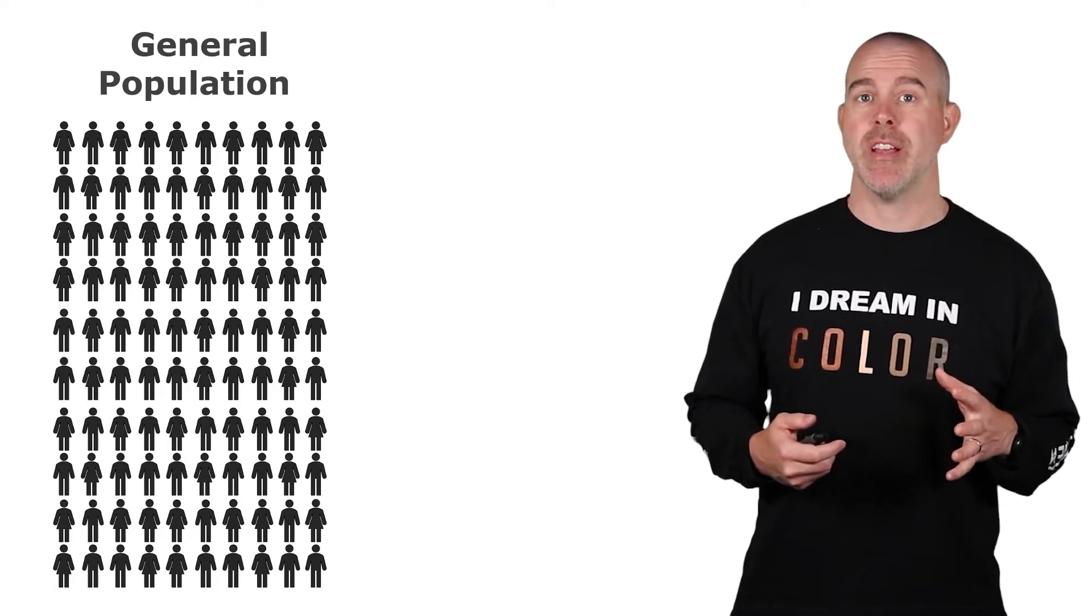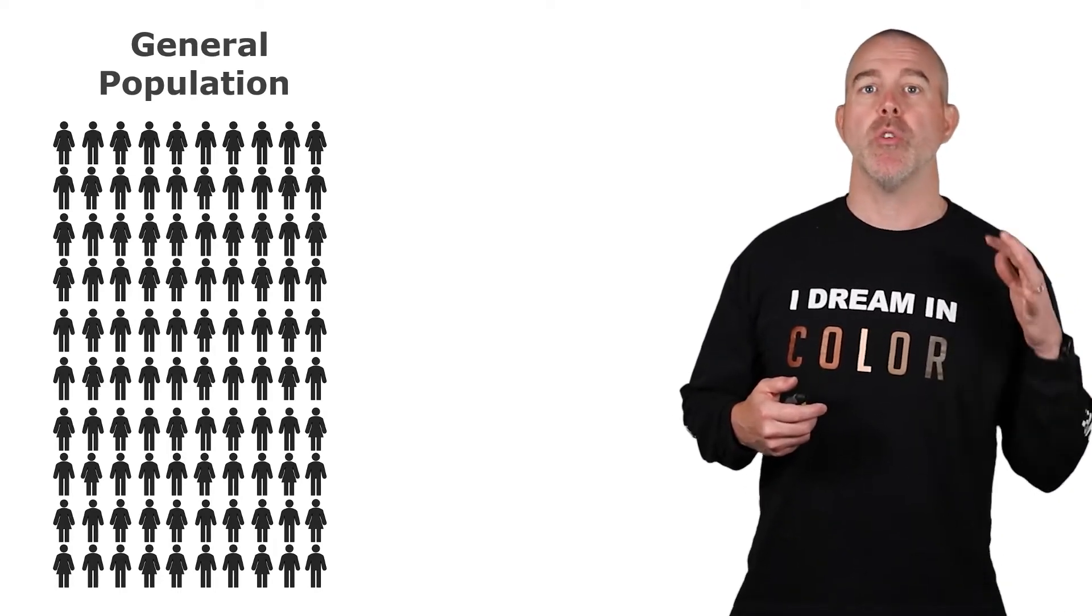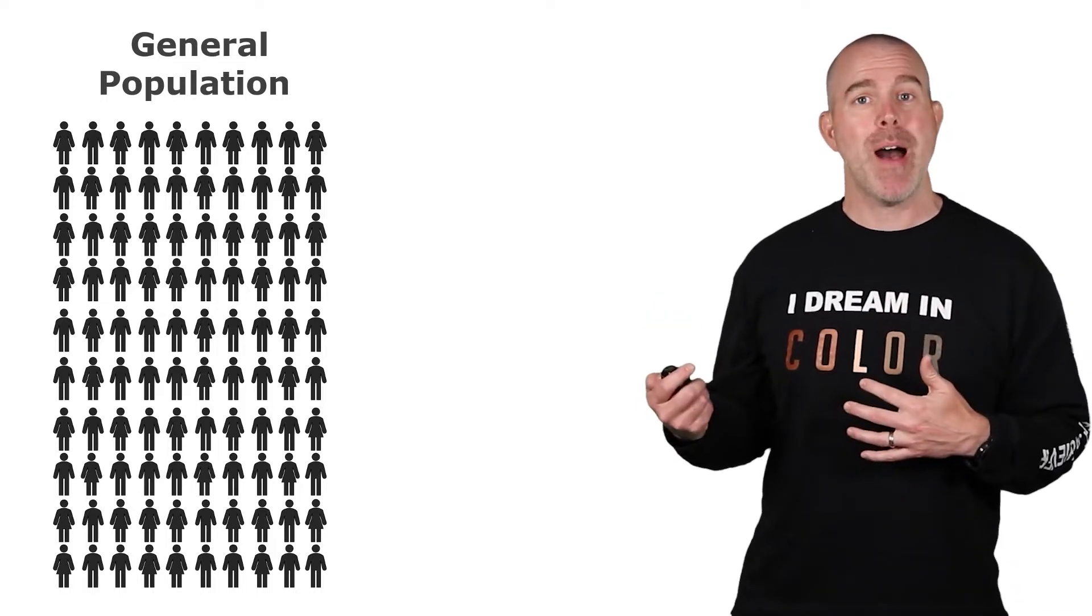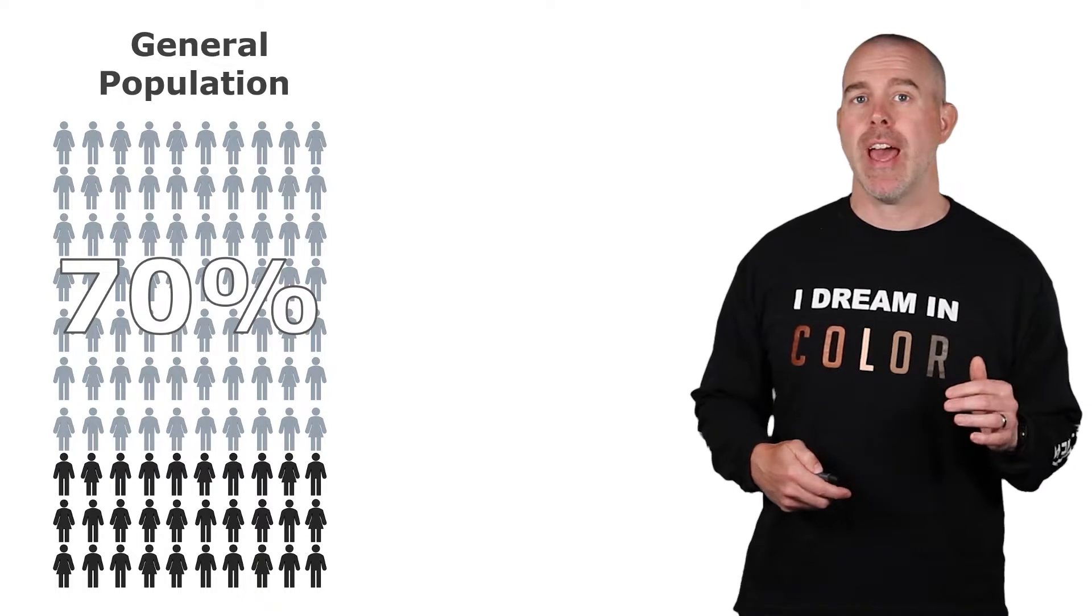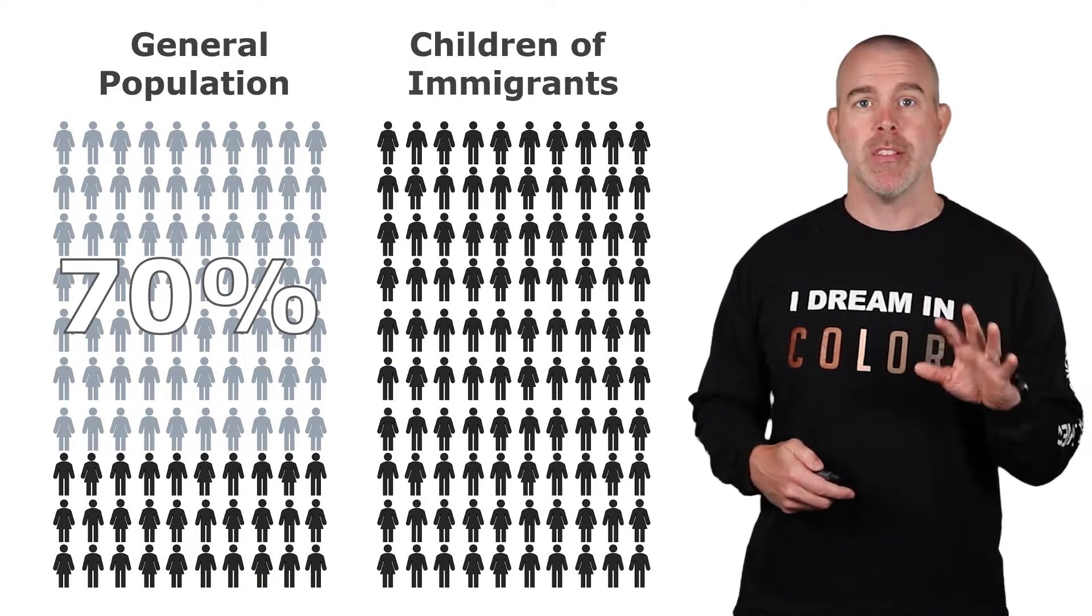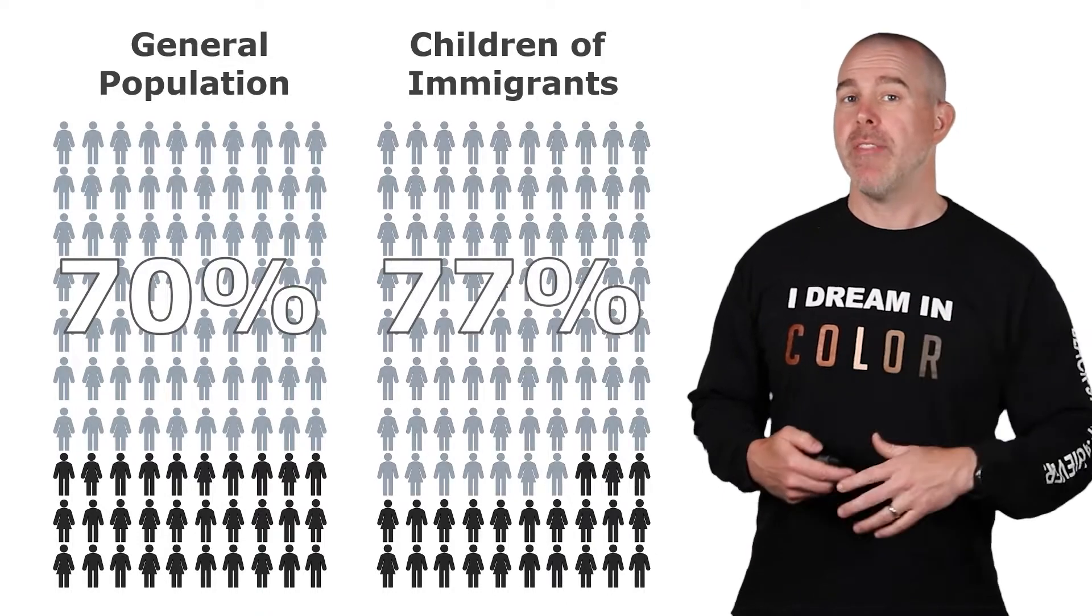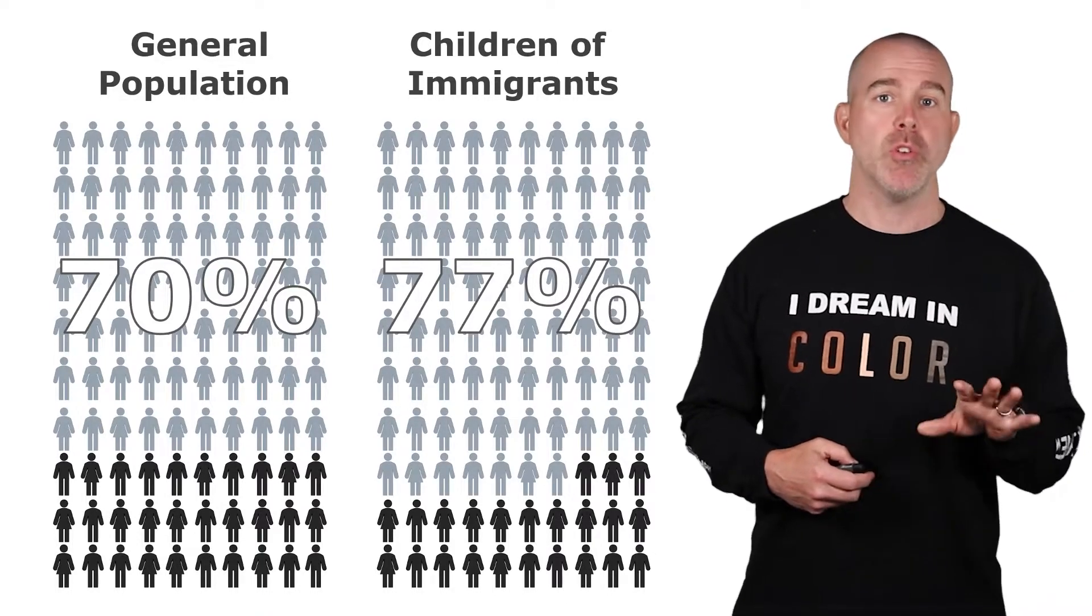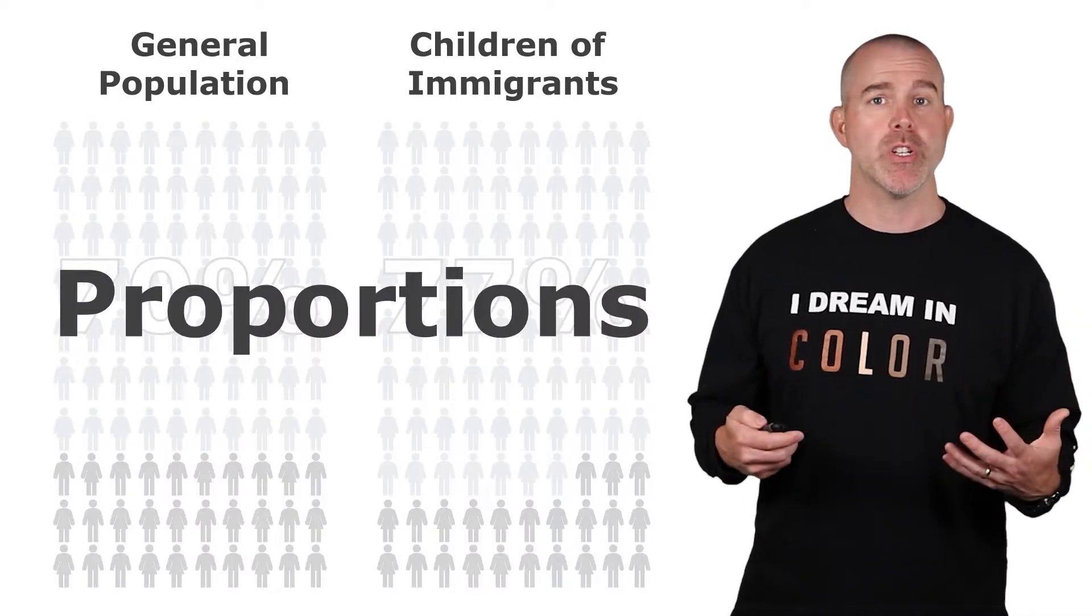We've already done some hypothesis testing. If you recall, we looked at the proportion of eligible voters who were registered. We had the general population, and that proportion was about 70%. And we also looked at our Children of Immigrants database. I'll put that link in the description. And we found that it was 77% of those who were eligible who had registered to vote. Now, these are examples of proportions.